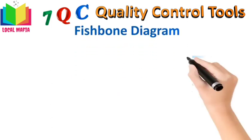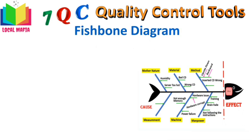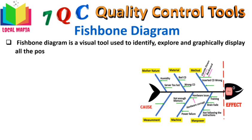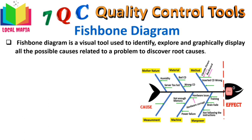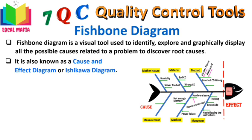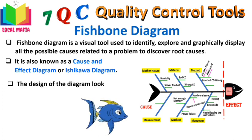Fishbone diagram: The fishbone diagram is a common tool used in the analysis phase of Six Sigma DMAIC. It is a visual tool used to identify, explore, and graphically display all possible causes related to a problem to discover the ultimate root cause. Also known as the cause-and-effect diagram or Ishikawa diagram, its design looks like the skeleton of a fish — starting from the right (the effect), with each large bone representing a major cause and small bones representing minor causes. A brainstorming session is required to identify all possible causes, which are then filled into the root cause, main cause, and primary cause categories.